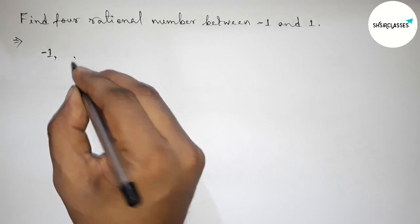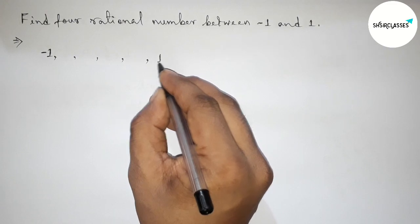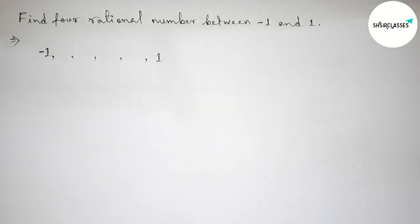So first of all, taking here four blank spaces to find four rational numbers.